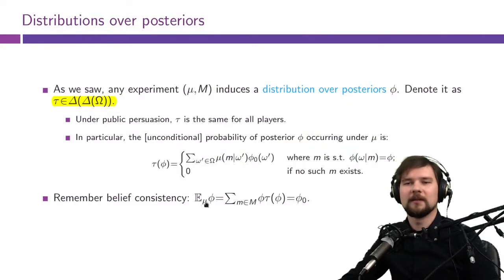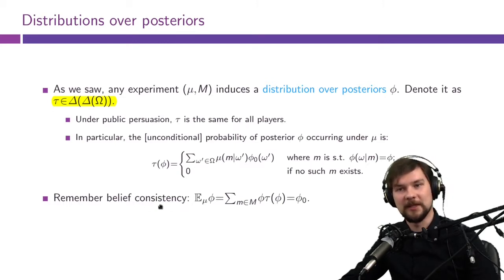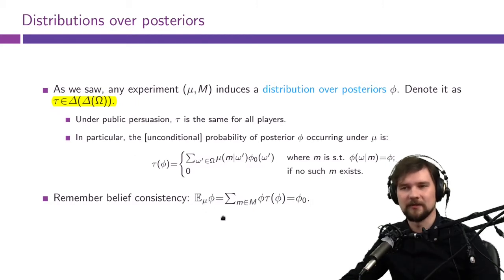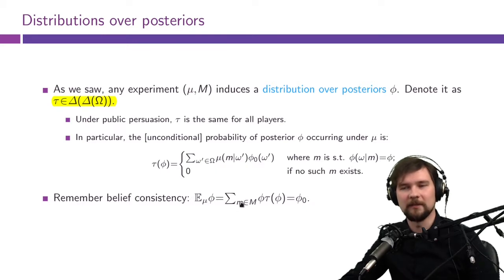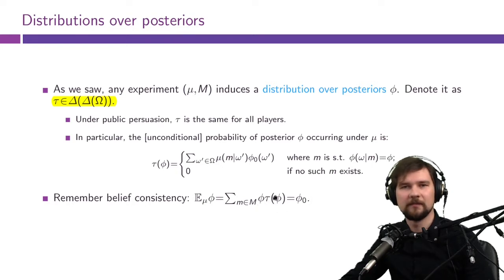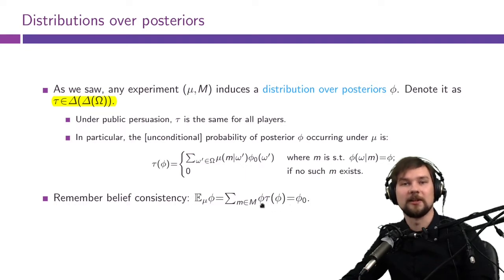This distribution over posteriors will also satisfy some kind of belief consistency. We can write our belief consistency condition in terms of the distribution τ. Namely, the expected posterior belief must be equal to the prior belief. The expected posterior is just the sum over all possible posteriors — or all possible messages — of the belief itself times the probability of this belief occurring. So the consistency condition uses this new shorthand notation for the probability of a posterior belief occurring.